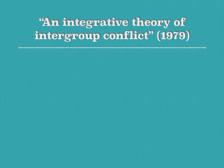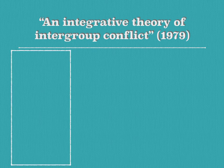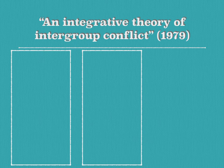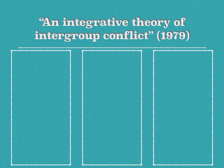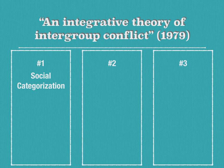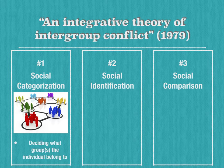In Tajfel and Turner's study, 'An Integrative Theory of Intergroup Conflict,' they broke down social identity theory into three components: social categorization, social identification, and social comparison. In social categorization, an individual decides what group or groups they belong to. An individual can belong to many groups at one time.